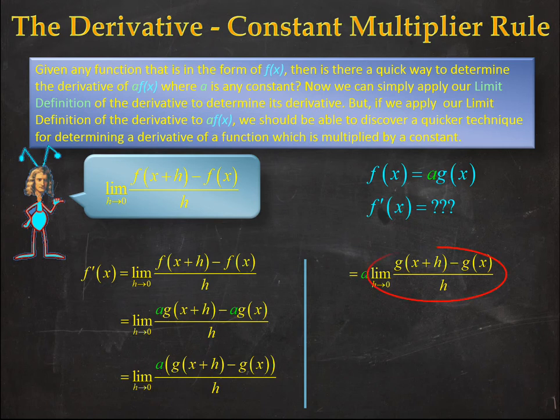But if you look at that little limit, that is the definition of the derivative of the function g, or in other words, simply g'(x). So our derivative is just equal to a·g'(x). If we have a constant times a function, the derivative is just that same constant times the derivative of that function. Simple as that.